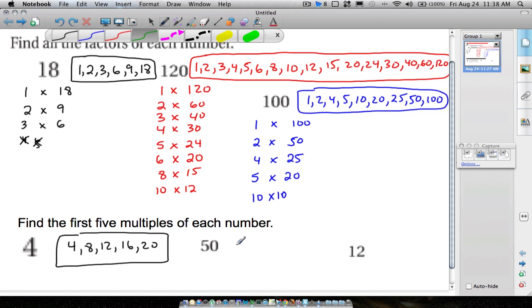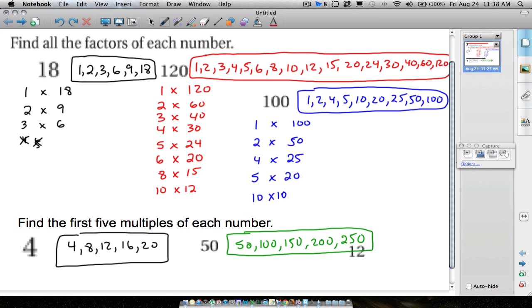So the first five multiples of 50 will be 50, 100, 150, 200, then 250. Those are the first five multiples of 50. These numbers here are not factors of 50. For example, 250 will not go into 50. However, 50 will go into 250. So make sure you don't get that multiple and that factor mixed up.